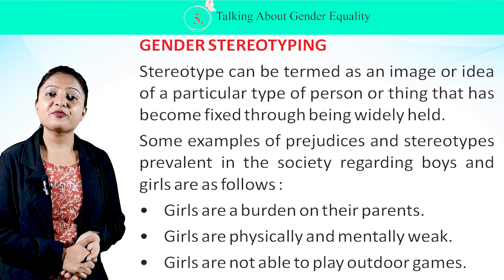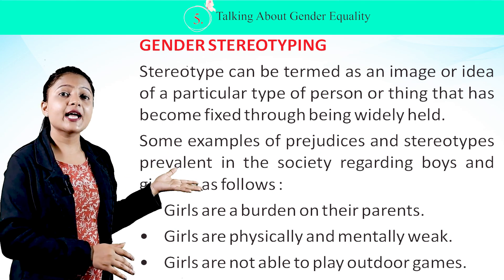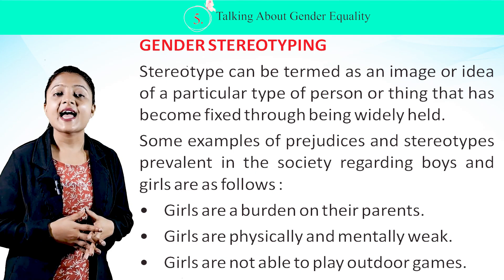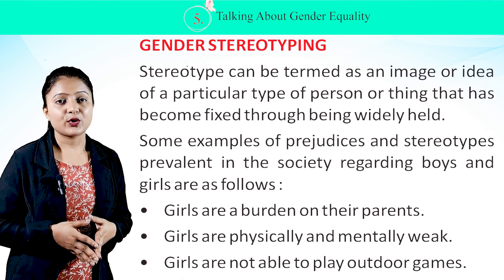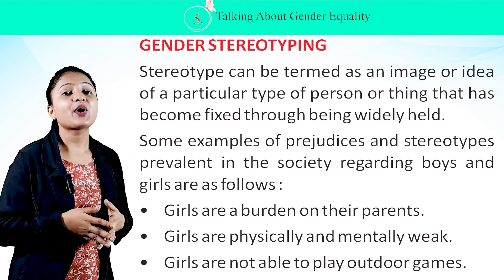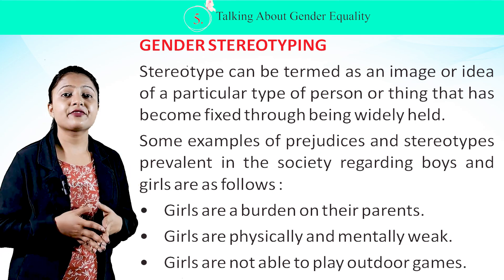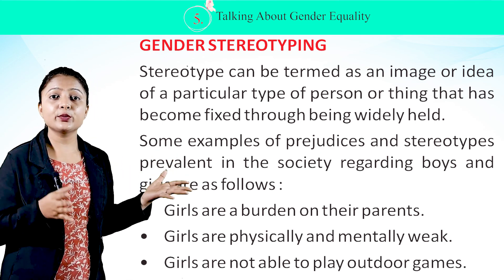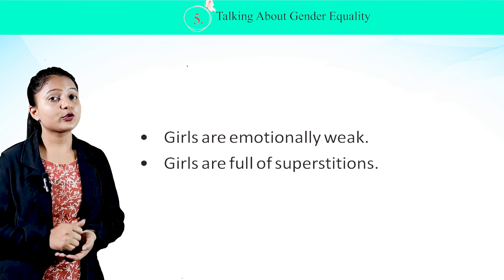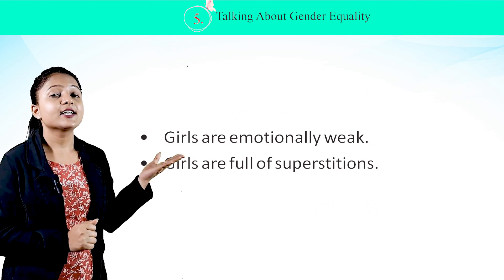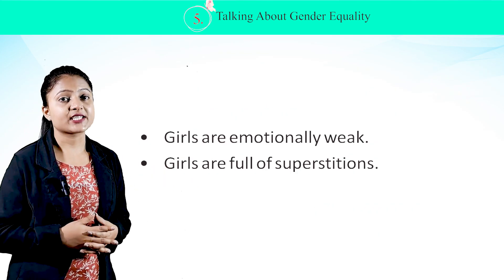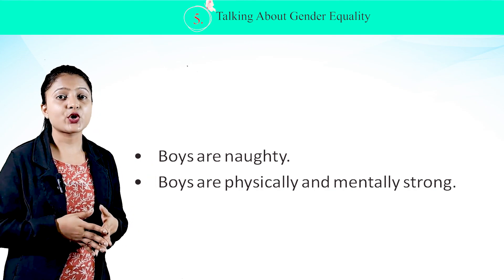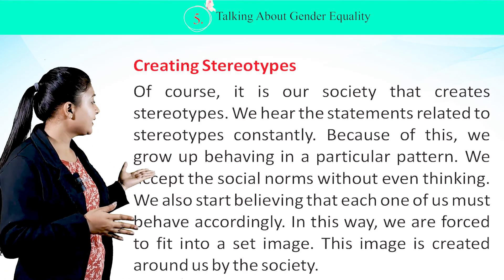Some examples of prejudices and stereotypes prevalent in society regarding boys and girls are as follows. Girls are a burden on their parents. Girls are physically and mentally weak. Girls are not able to play outdoor games. Girls are emotionally weak. Girls are full of superstitions. Boys are naughty. Boys are physically and mentally strong.